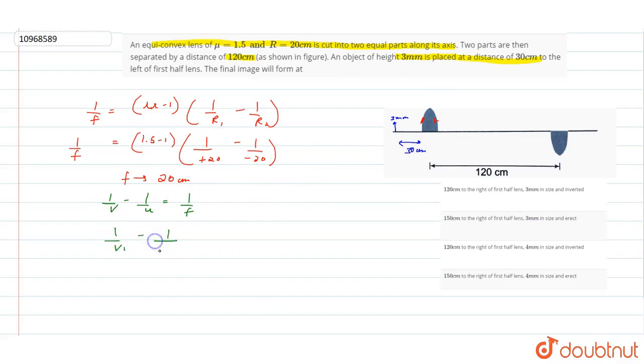So 1 by v1 minus 1 by u, this is 1 by minus 30, that is equal to 1 by f. That is 1 by plus 20 because this is convex lens. This will be plus.